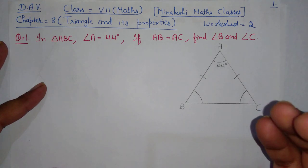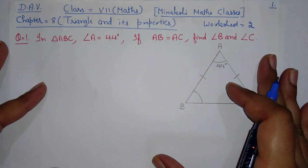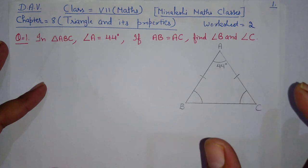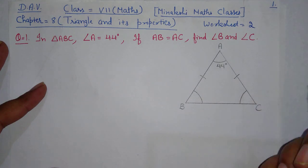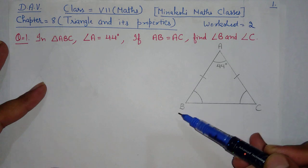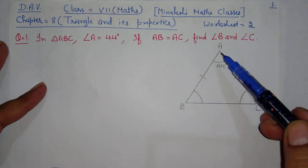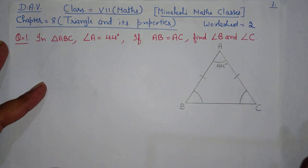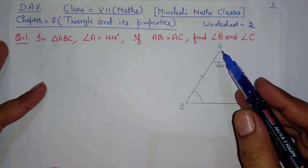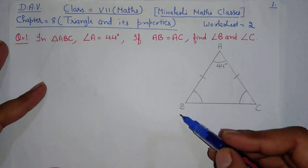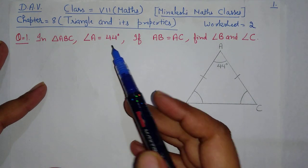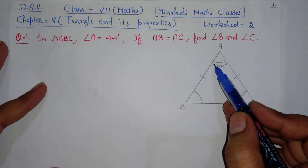No figure was given in the question, but until we draw the triangle figure, we cannot solve the question. So first they said 'in triangle ABC', so I drew the ABC triangle myself. Measurement doesn't matter — just draw any triangle and name it ABC. Angle A is equal to 44 degrees, so at point A, the angle is 44 degrees.